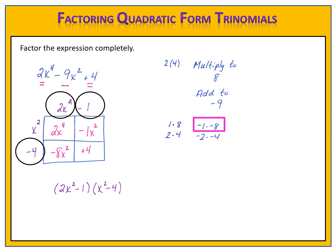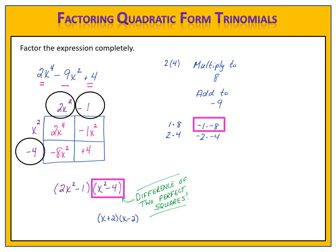I double-check my terms to make sure I can't factor further. Are there any greatest common factors? There are not. Is there a difference of two perfect squares? Yes — x squared minus 4 is a difference of two perfect squares. We can factor x squared minus 4 into x plus 2 times x minus 2. Bring down the other factor, 2x squared minus 1. Now I have factored the trinomial completely.